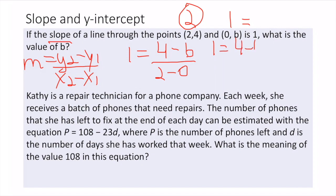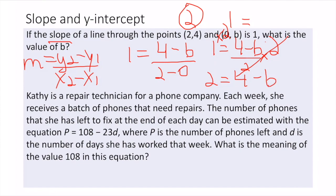To solve for b, I need to get rid of the 2 in the denominator, so I multiply both sides by 2. That gives me 2 = 4 - b. Then I subtract 4 from both sides, giving me 2 - 4 = -b, which is -2 = -b.